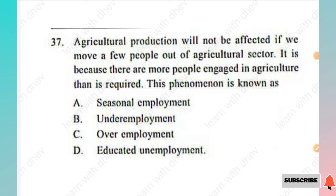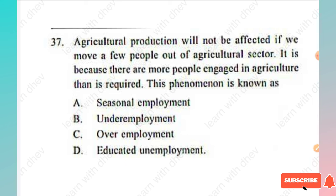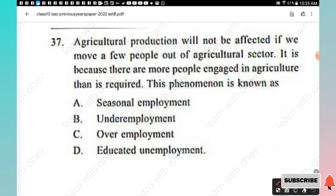Question 37: Agricultural production will not be affected if a few people are moved out of agriculture because there are more people engaged in agriculture than required. This phenomenon is known as — seasonal employment, underemployment, overemployment, educated unemployment. The right answer is Option B, underemployment.